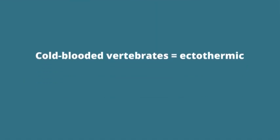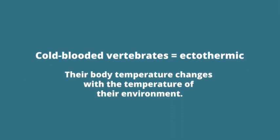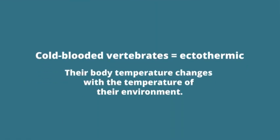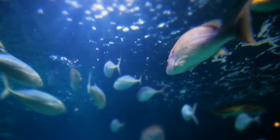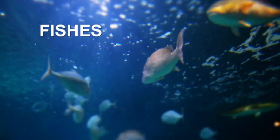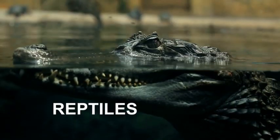Cold-blooded vertebrates are ectothermic. That is, their body temperature changes with the temperature of their environment. When the environment is cold, these vertebrates become cool as well, and when their environment is hot, their body temperature goes up. Cold-blooded vertebrates include fishes, amphibians, and reptiles.